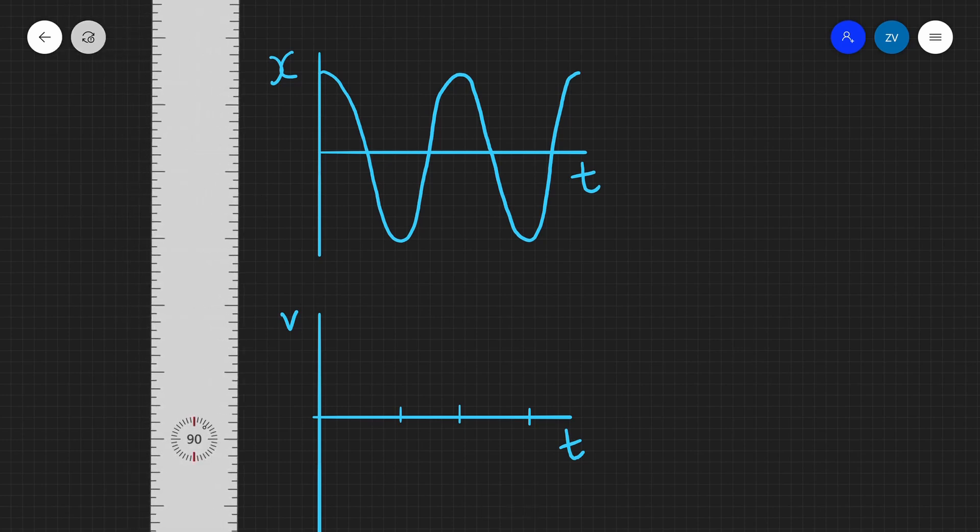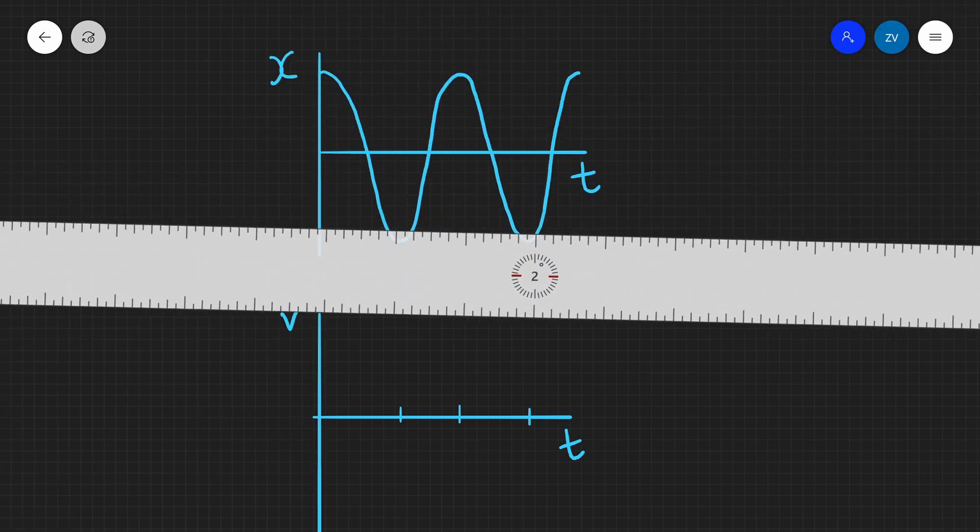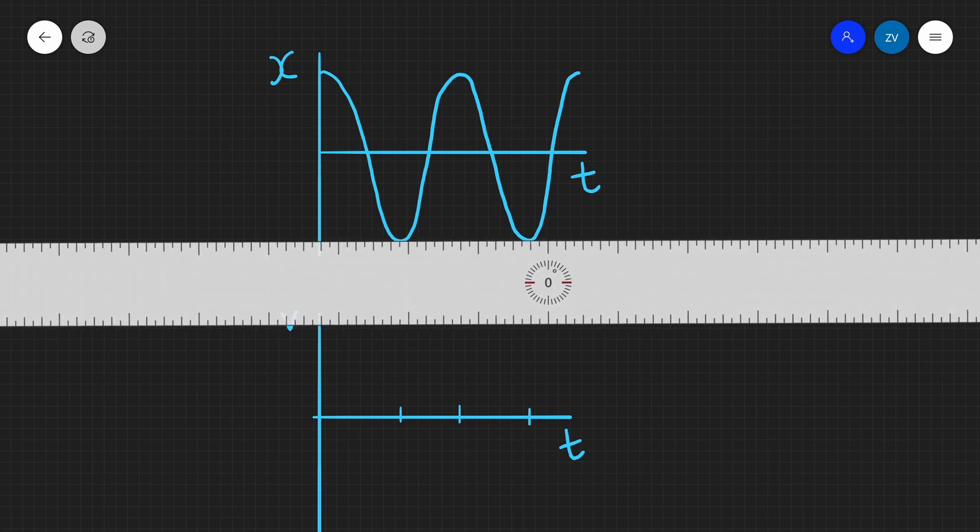In that first region, over here, you're going to notice two things. Number one, whenever there's a peak, the gradient is zero. So that means that at this point here, the velocity is zero. Here the velocity is zero, here the gradient is flat as well, so the velocity is going to be zero, here the velocity will be zero, and we'll also be starting off from a zero velocity.